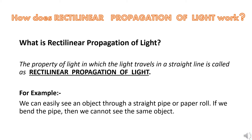Now, many of you will have a question: what is rectilinear propagation of light? It is the property of light in which light travels in a straight line. For example, we can easily see an object through a straight pipe or a paper roll. But if we bend the pipe or the paper roll, then we cannot see the same object.